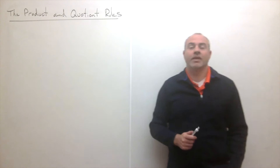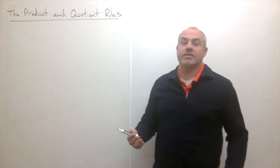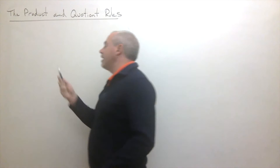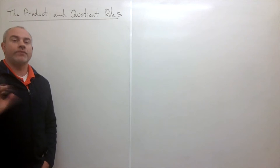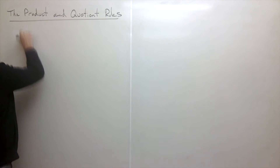Welcome back. Today I'd like to talk to you about the product and the quotient rule. What we learned in the last section is how to take derivatives of sums, derivatives of something multiplied by a constant, and how to use the power rule. Today we want to learn about what are called the product and the quotient rules — what if we have two different functions that are multiplied together?